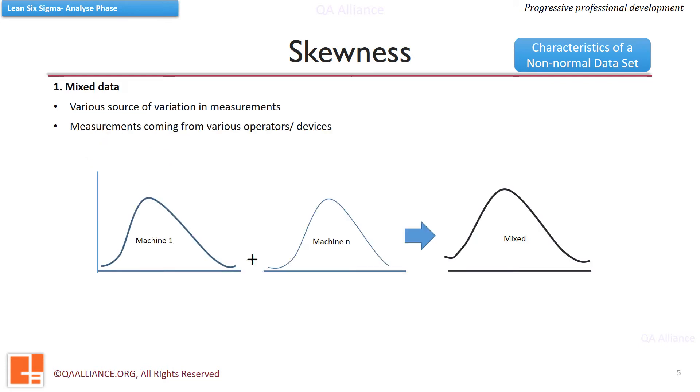First reason behind skewness can be mixed data. Remember in MSA, we saw that there could be various sources of variation in measurements. As measurements for the samples of the same dataset are coming from various operators and devices, we can get a mixed set of data where various distributions are hidden, and this may lead to distortion in the distribution.